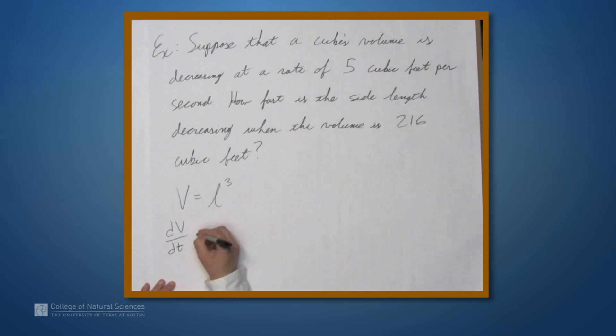So, dV/dt is 3l squared. Once again, using the power rule applied to this expression. And then, here's where the chain rule comes in because l is itself a function of t. So, 3l squared times dl/dt.